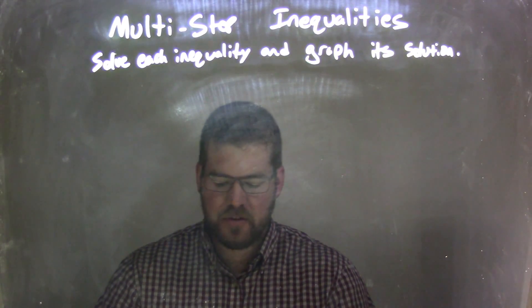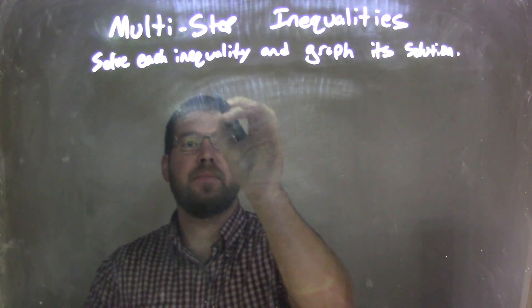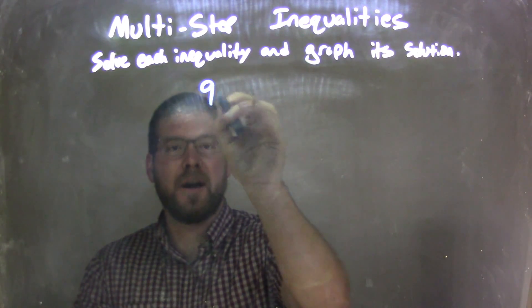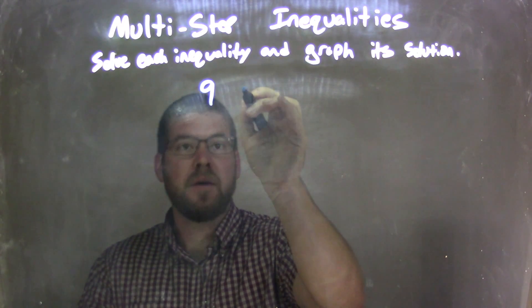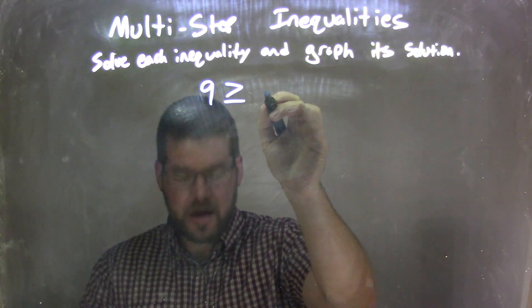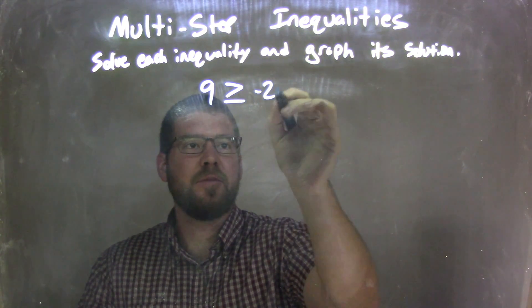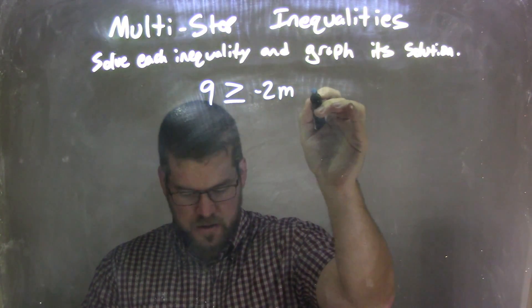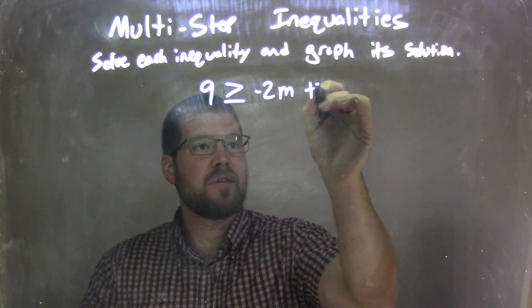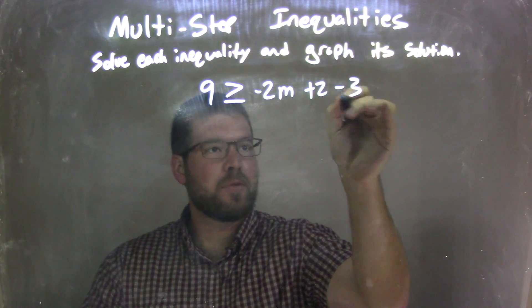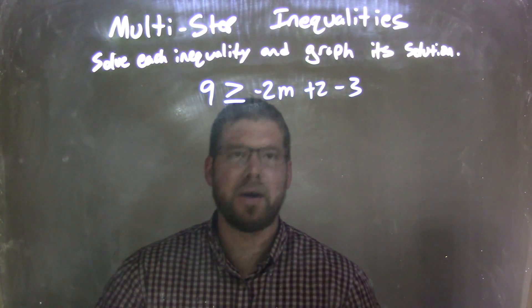So if I was given this inequality: 9 is greater than or equal to negative 2m plus 2 minus 3.